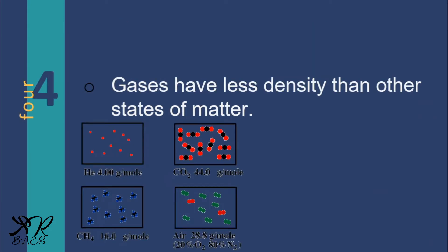The fourth one, gases have less density than other states of matter. Gases have very low density as compared to liquids and solids. For example, air has a density of only 0.00130 gram per milliliter as compared to water, which has 1 gram per milliliter, and aluminum, which has 2.70 grams per milliliter.